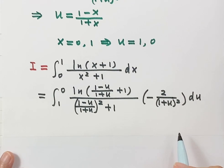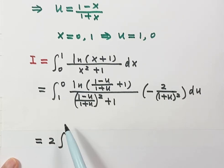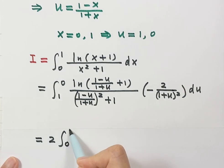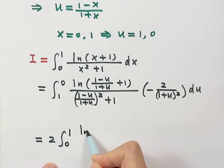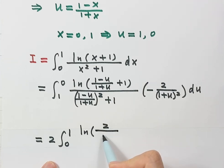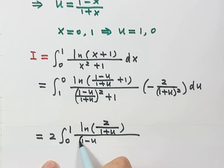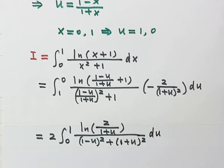Let's simplify. We take the constant outside, swap the limits and flip the sign to go from 0 to 1. Using a common denominator in the log argument, the top simplifies to 2/(1+u), and the denominator (1+u)² cancels out, leaving just du.